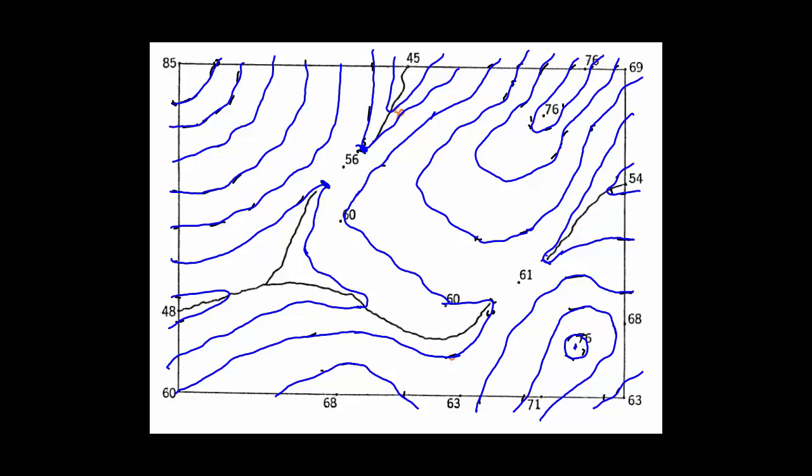We have two ridges, one at the upper right that has a peak elevation of 76 and another one with a local peak down in the lower right as well.